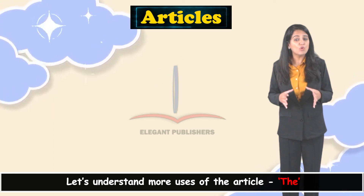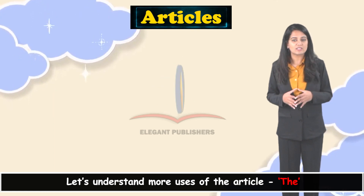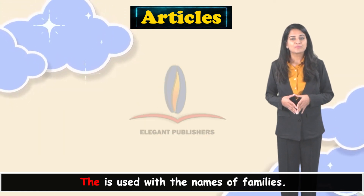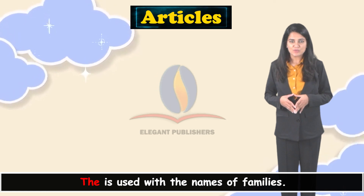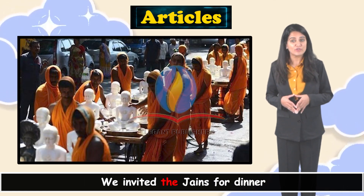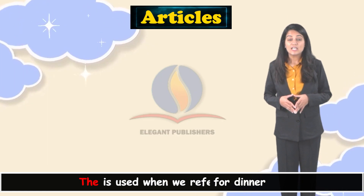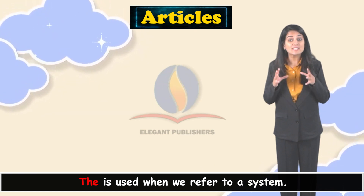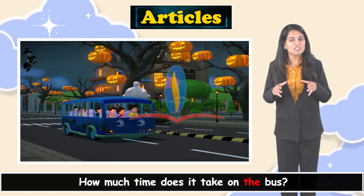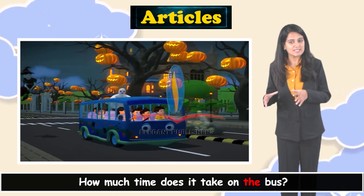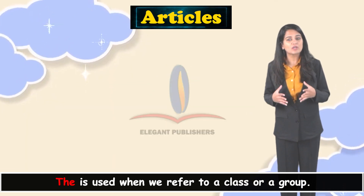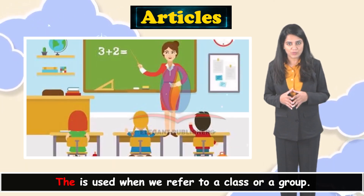Let's understand more uses of the article 'the.' The is used with the names of families — for example, 'We invite the Jains for dinner.' The is also used when we refer to a system — for example, 'How much time does it take on the bus?' The is used when we refer to a class or a group — for example, 'Life is a party for the rich.'